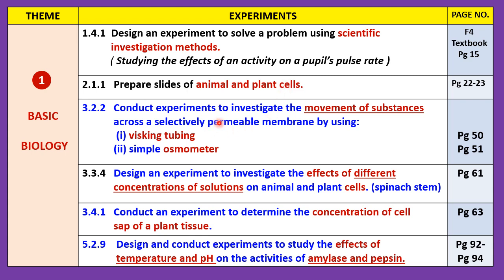In Chapter 3 we have some very important experiments for practical tests: conduct experiments to investigate the movement of substances across a selectively permeable membrane by using Visking tubing and a simple osmometer. The experiments shown in blue indicate that they can be carried out in the lab and may also be tested in Paper 3. For experiments not highlighted in blue, it doesn't mean they cannot come out — the exam may modify a long experiment to make it shorter, or modify it so it still relates to the experiments in this list.